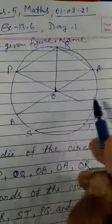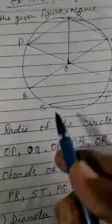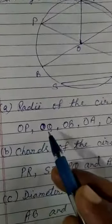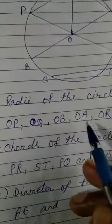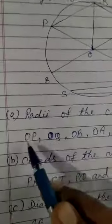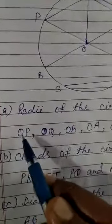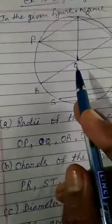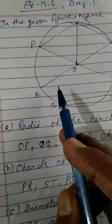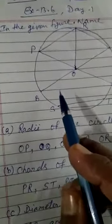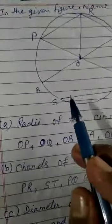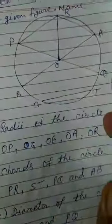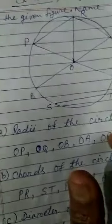These are the radii of the circle. So you will write in the answer: radii of the circle equals OP, OQ, OB, OA, and OR. Here you see that all the line segments start from O because O is the center, and the points A or R or P or B or Q lie on the circle.